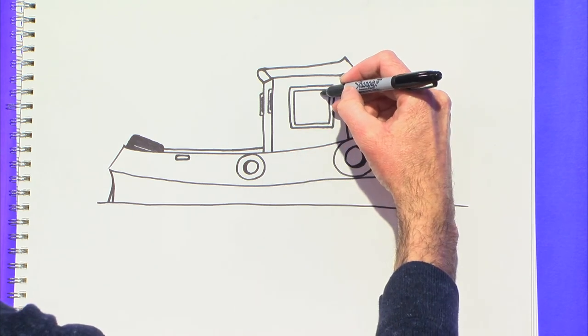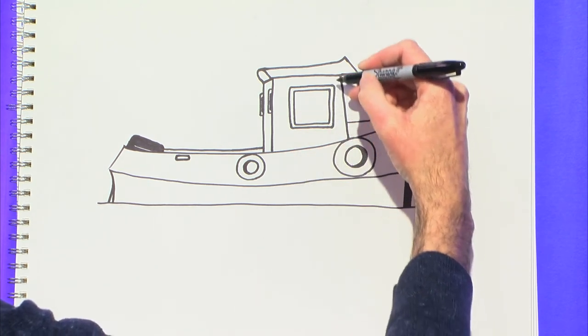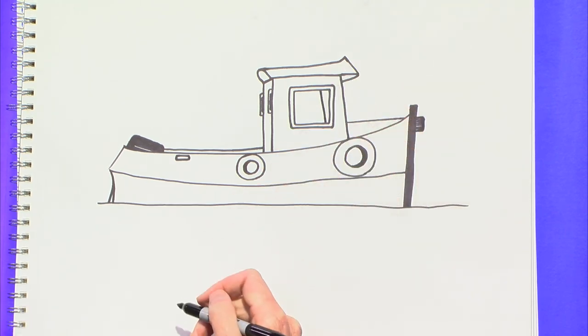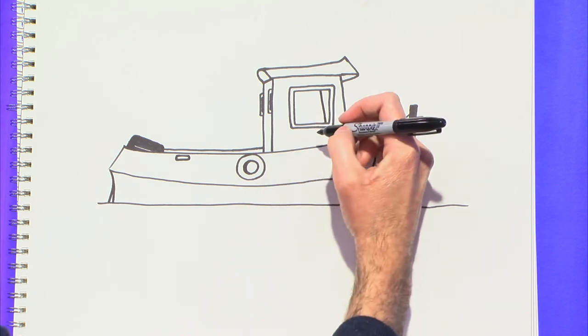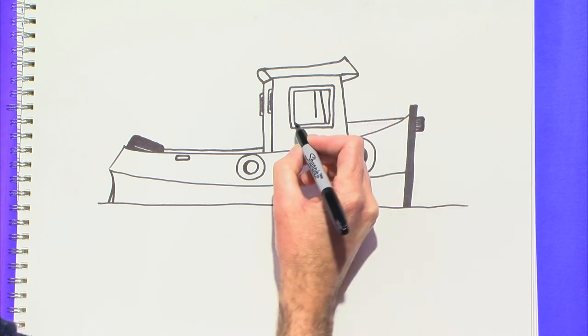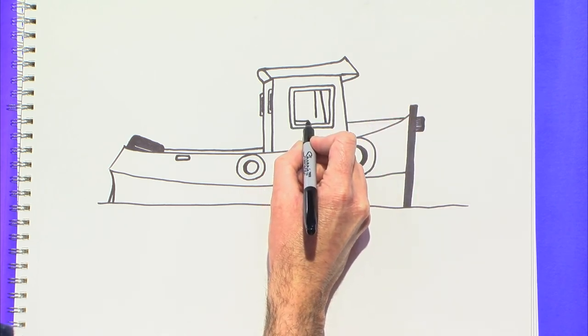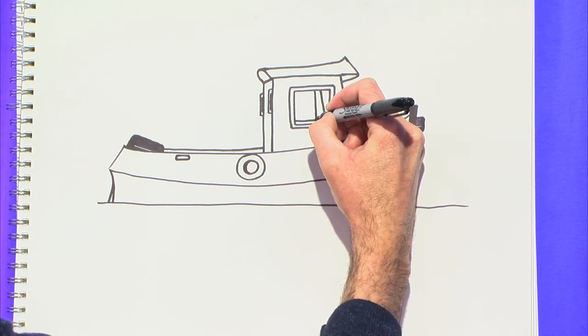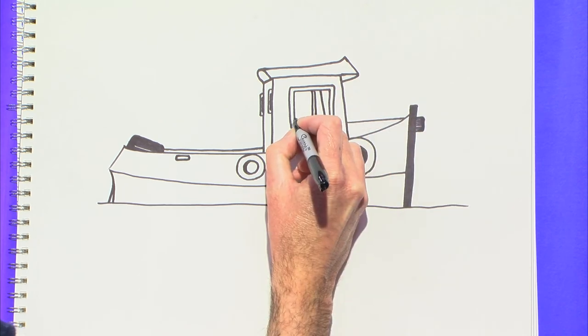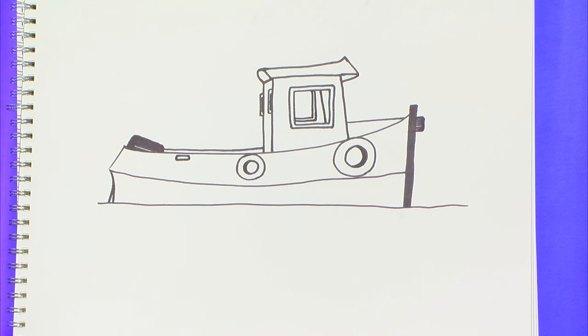And then I'm just going to kind of imply the backside. Within the window there, I'm going to do that. And then draw what you'd be able to see of the window on the port side. Like that.